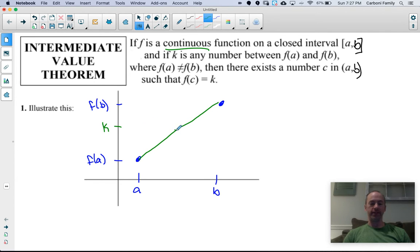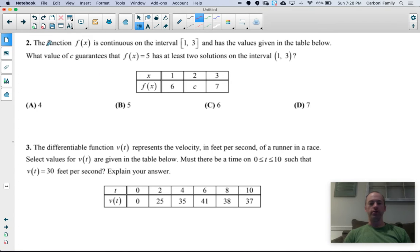If you connect them in the simplest way possible, which will be linearly, then you would have to hit K about at that point. If you choose to connect them in a wavy way, that's fine. You might hit K more than once, but you are guaranteed that no matter how you connect these two points, that there is a point C between A and B such that your function hits that value of K. You're guaranteed to hit that point somewhere in the middle as long as the function is continuous. So let's look at a couple of examples using this theorem.